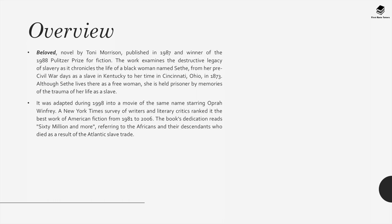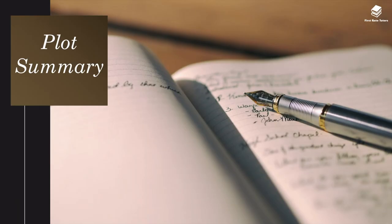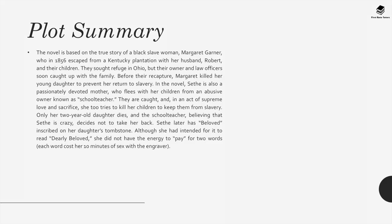The book's dedication reads '60 million and more,' referring to the Africans and their descendants who died as a result of the Atlantic slave trade. The novel is based on the true story of a black slave woman, Margaret Garner, who in 1856 escaped from a Kentucky plantation with her husband Robert and their children. They sought refuge in Ohio, but their owner and law officers caught up with the family. Before their recapture, Margaret killed her young daughter to prevent her return to slavery.